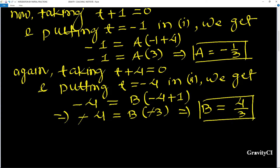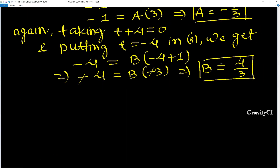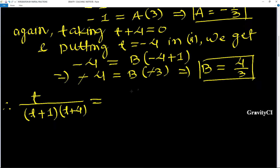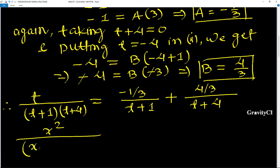Now substituting A and B values: t/((t+1)(t+4)) = (-1/3)/(t+1) + (4/3)/(t+4). Since t = x², this becomes x²/((x²+1)(x²+4)) = (-1/3)/(x²+1) + (4/3)/(x²+4).